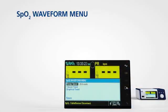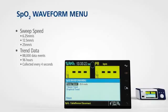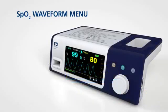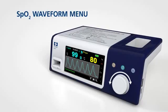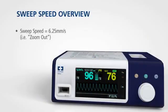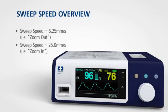The monitoring system allows you to set the sweep speed of the waveform and opt to view the tabular or graphical trend screen. To access one of these functions, simply rotate the jog dial to highlight the waveform or trend display area and press. The sweep speed view allows you to set the speed at which the SPO2 waveform trace moves across the screen — the higher the sweep speed value, the more granular the data that appears on the screen.